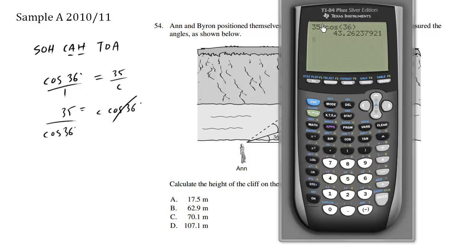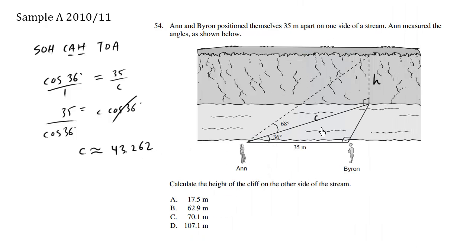So making sure that we're in degree mode, we have 35 divided by cos 36, is 43 approximately. C is approximately equals to 43.262. So we solved for C.